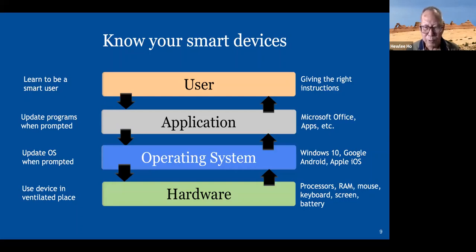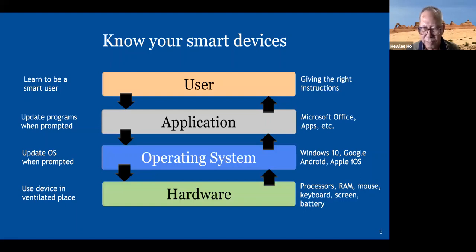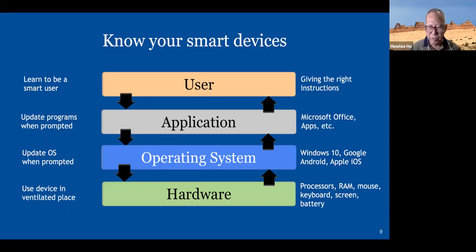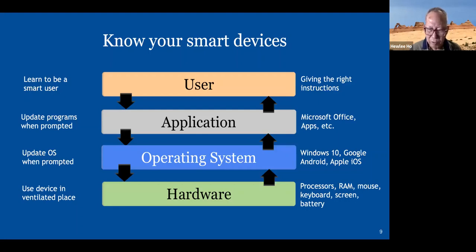The next one is important: the operating system. Every smart device has its own operating system and the housekeeping also varies slightly. In the market now, we have Windows 10 for laptop and desktop PC. If you are using a smartphone, you have the Apple smartphone or the Android smartphone using Google Android. These are the main operating systems. And the last but not least is the hardware — a lot of people neglect this and can get into trouble.